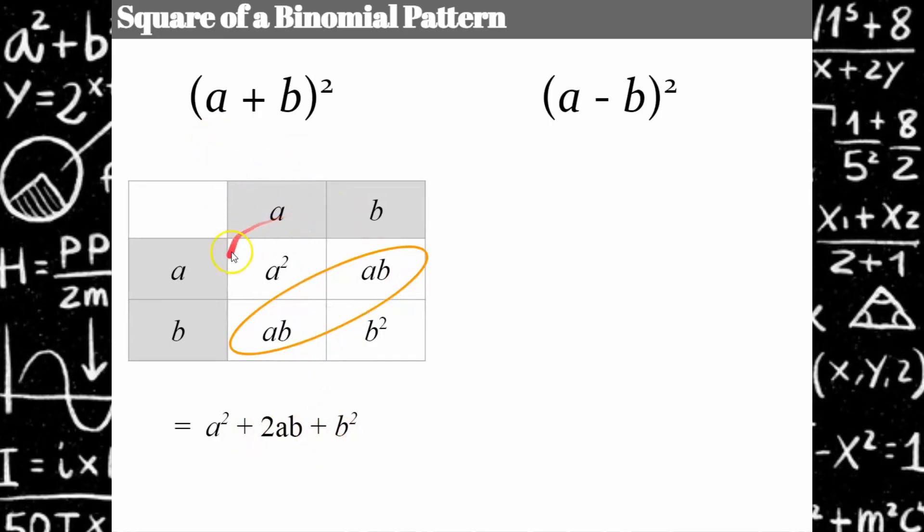I'm always going to have the A term squared plus 2AB plus B squared. So you could, instead of doing all of this out, just know that you square the first term, square the second term, and then it's the middle term here is 2 times A times B.